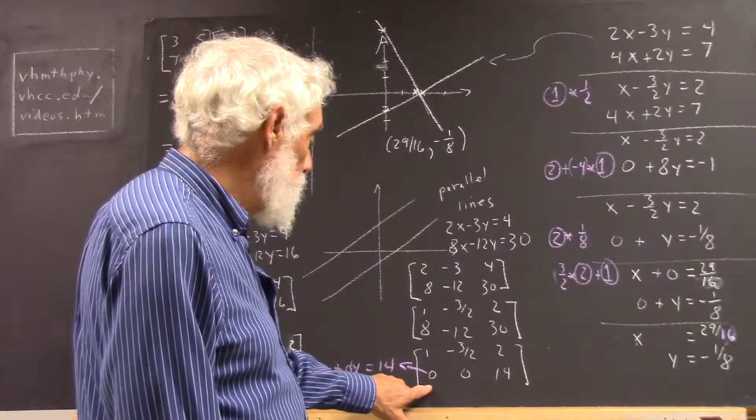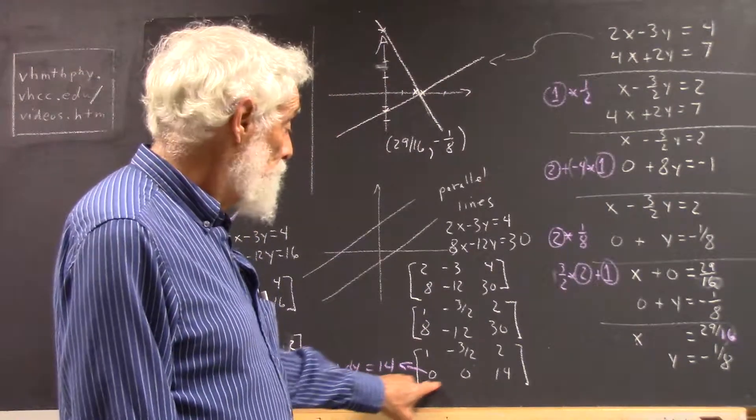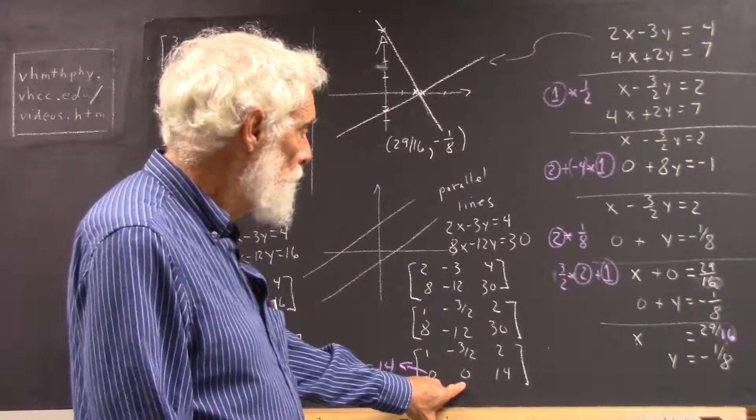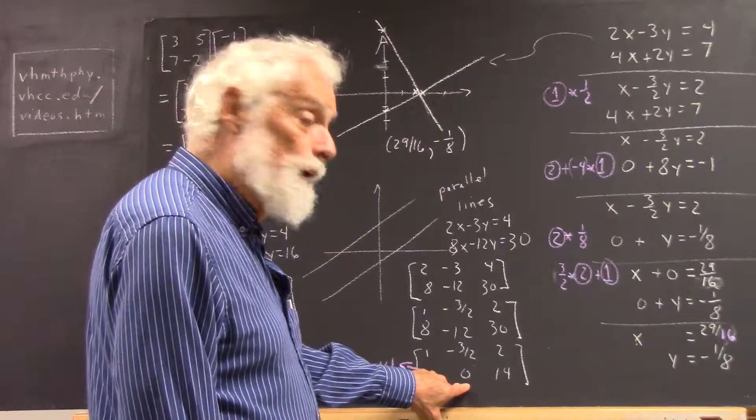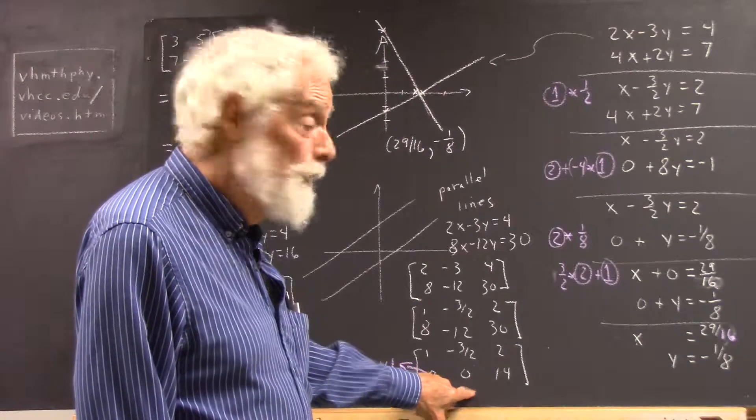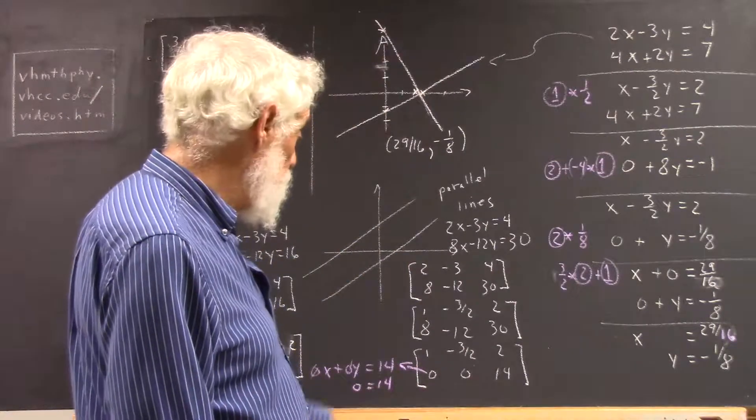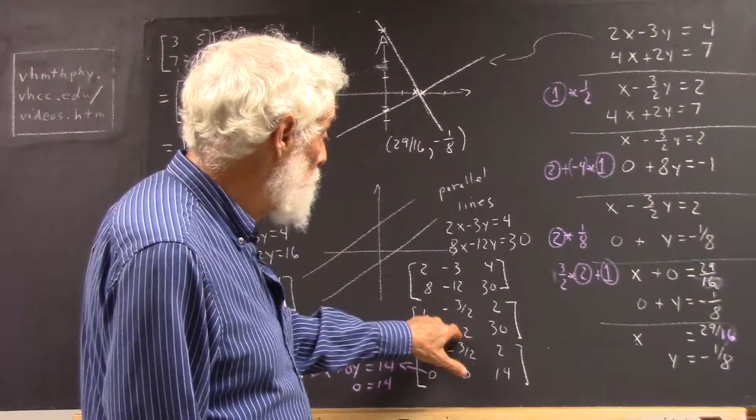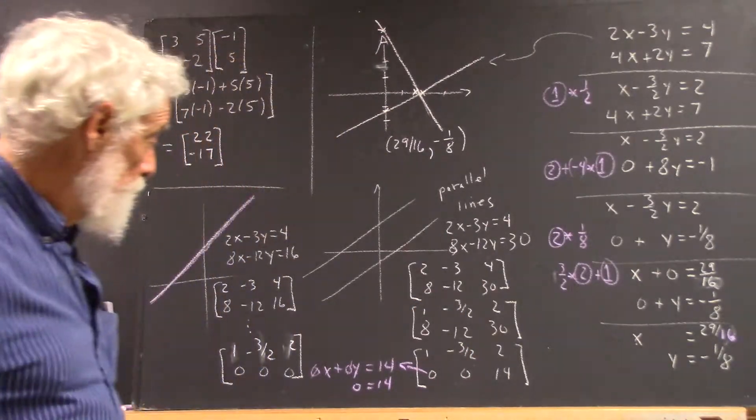Now, look at what happened. We've got a 0 here, but at the same time, we've got a 0 here. That didn't happen before, okay? But it happens now, and it will always happen if your lines have the same slope because these numbers will be in the same proportion as these numbers, okay?